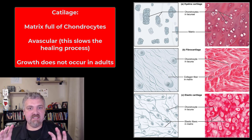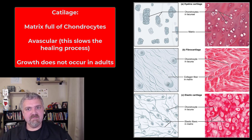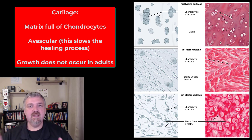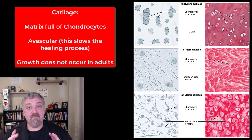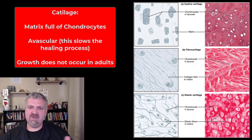Chondro means cartilage. These special chondrocytes — these cartilage cells — are in what's called the lacunae, and they have a matrix around them. That's what makes up cartilage. Cartilage is encapsulated by what's called the perichondrium, a dense irregular connective tissue.